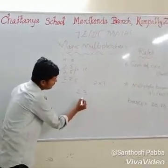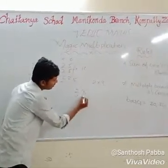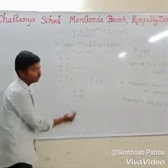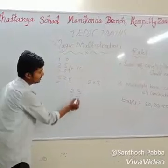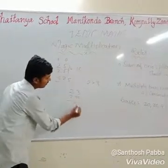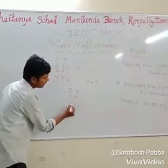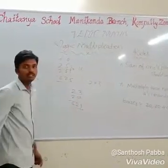Suppose 23 into 27: sum of the numbers — 3 plus 7 is 10. Then 3 times 7 is 21, and the base number 2 times 3 is 6. So the answer is 621.